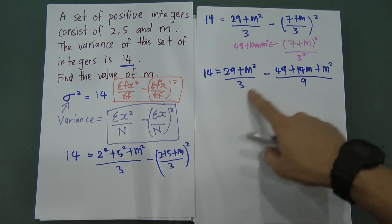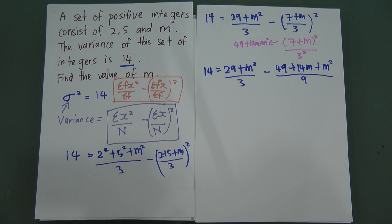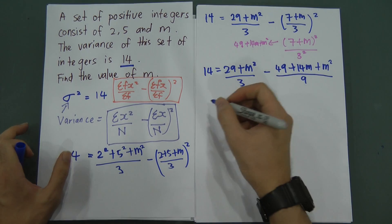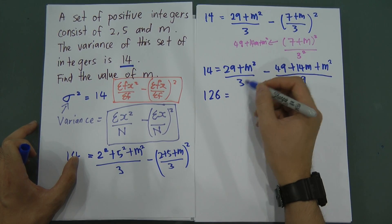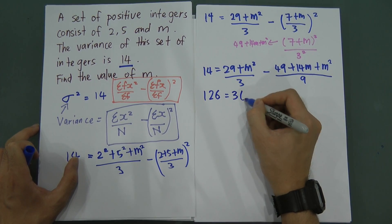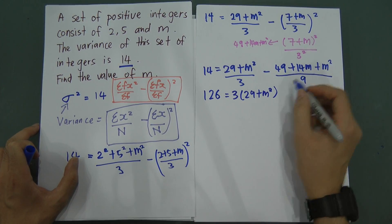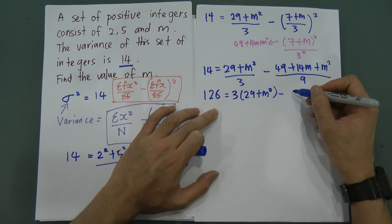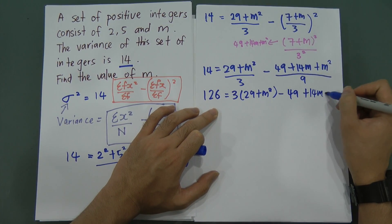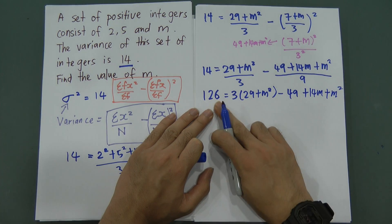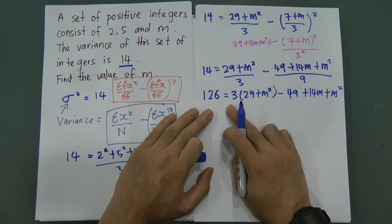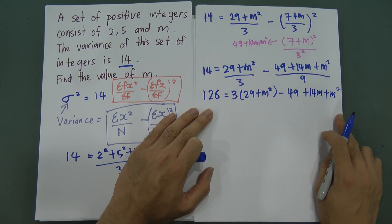Multiplying everything by 9: 14 × 9 = 126. The first fraction multiplied by 9 gives 3(29 + M²). The second term, already over 9, simply becomes (49 + 14M + M²). So: 126 = 3(29 + M²) − (49 + 14M + M²). Expanding: 126 = 87 + 3M² − 49 − 14M − M².